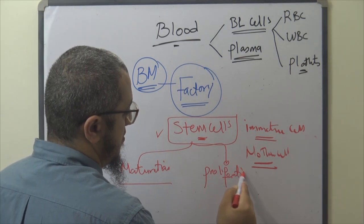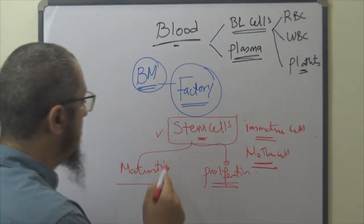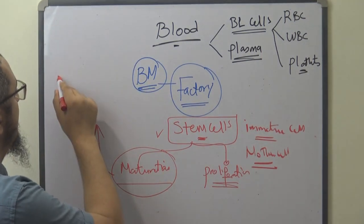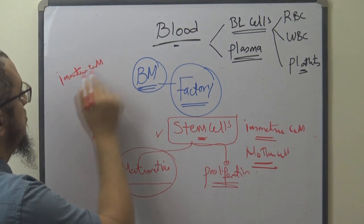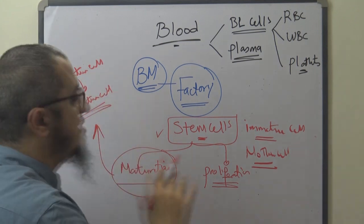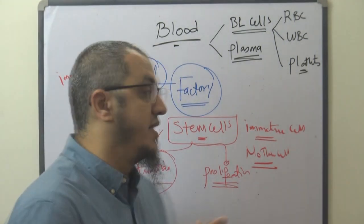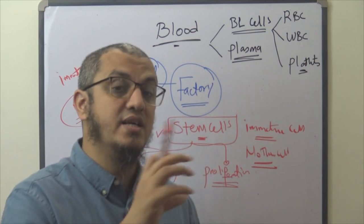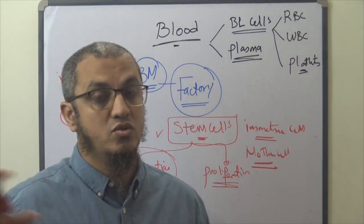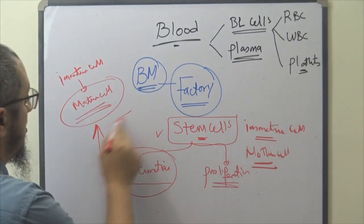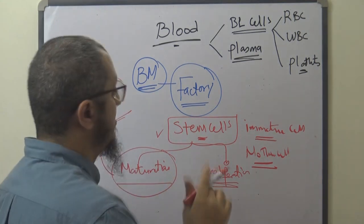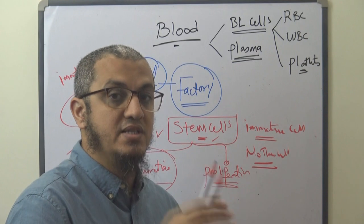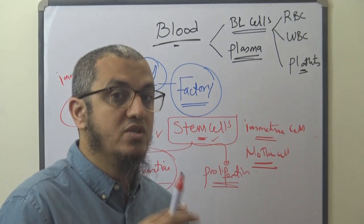The stem cells have two roles. The first role is maturation and proliferation. Maturation means the cells will mature — they will convert from immature cells to mature cells through different stages. One of the mature cells is RBCs and white blood cells, and these mature cells will be found in the peripheral blood. The bone marrow allows only mature cells to go to the blood — immature cells stay inside.